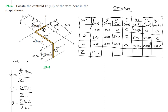Now let's do the summations. For Σ(x·L): 45,000 + 180,000 + 120,000 = 345,000. For Σ(y·L): 180,000 + 240,000 = 420,000. For Σ(z·L): only section three contributes, giving negative 80,000.